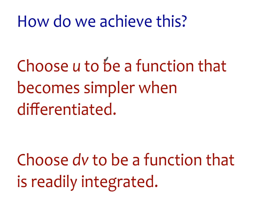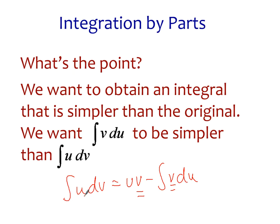We pick u to be a function that gets simpler when differentiated — or at worst no harder. We choose dv to be something we know how to integrate. Going back: we express u dv as uv minus the integral of v du. To find v, we integrate dv. We get du by differentiating u. So for the second integral to be simpler than the first, du has to be simpler than u, and dv has to be easily integrated so that v can be integrated as well.